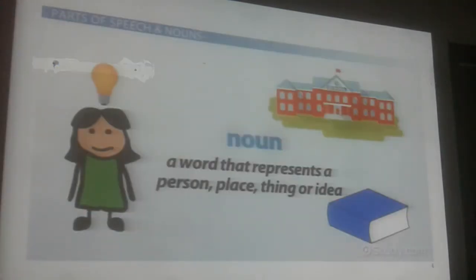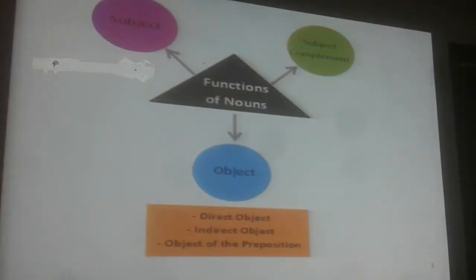Definition of Noun: A noun is a word that represents a person, place, thing or idea. Functions of Nouns: Nouns can function as subject, subject complement, object, direct object, indirect object, or object of the preposition.